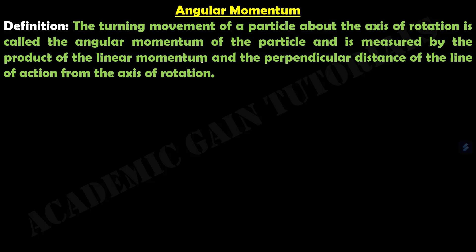What is angular momentum? The turning movement of a particle about the axis of rotation is called the angular momentum of the particle. It is measured by the product of the linear momentum and the perpendicular distance of the line of action from the axis of rotation. Suppose a particle of mass M is moving along curve AB with linear velocity V.